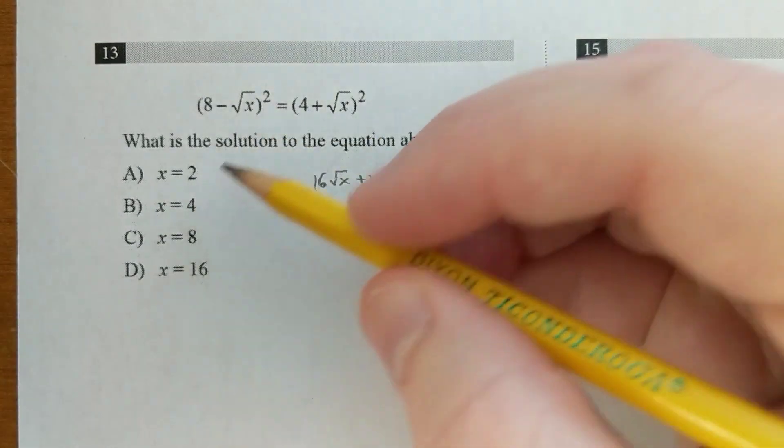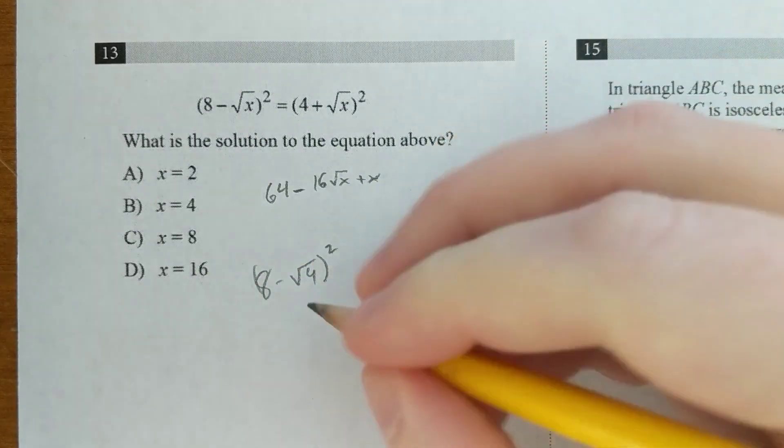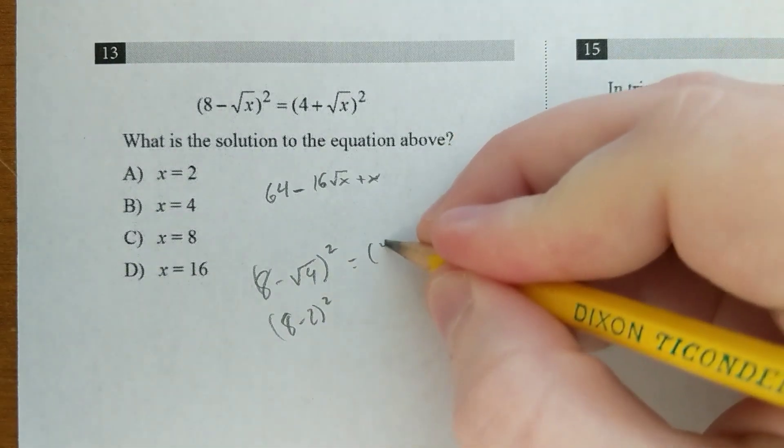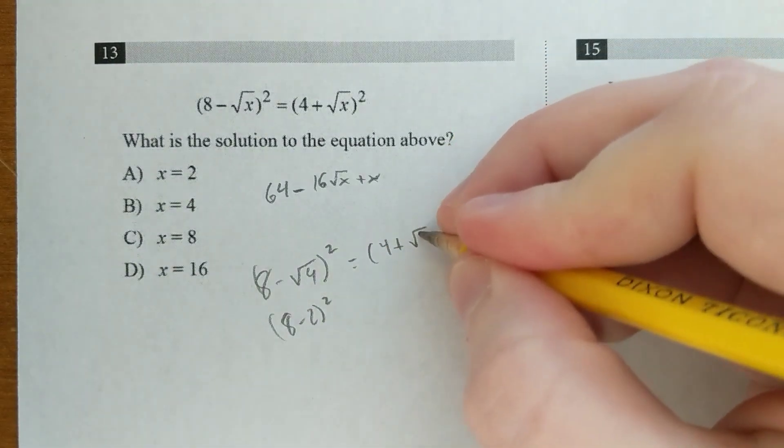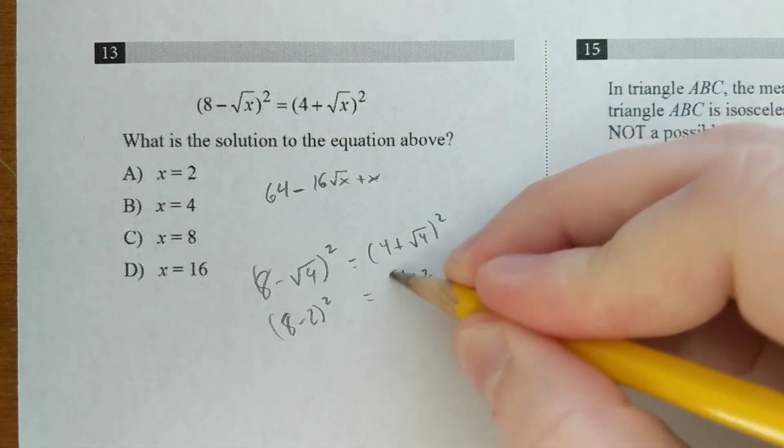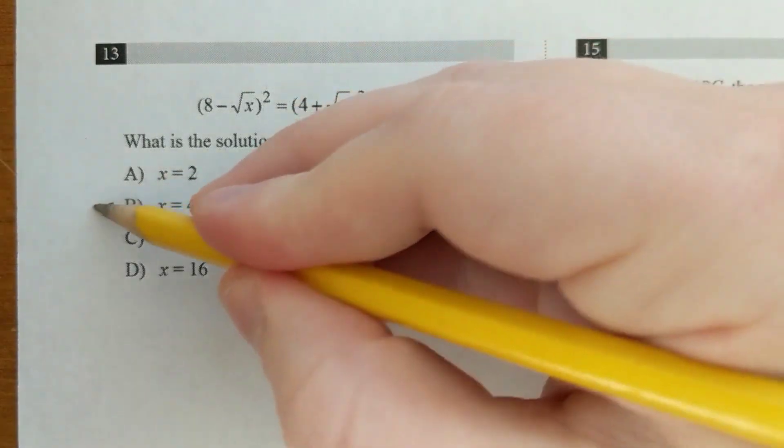So if you plug in 4, you're going to have 8 minus the square root of 4 squared. So that's 8 minus 2 squared. And on the other side, you're going to have 4 plus the square root of 4 squared. So that's 4 plus 2 squared. 6 squared equals 6 squared. That's true, so the answer's 4.